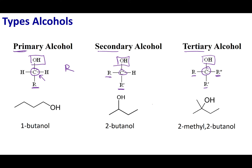Note that when I write R, R prime, and R double prime, this means the R groups are carbon chains but not necessarily the same chain. For example, one R group might be one carbon long and another two carbons long — these designations are arbitrary. We're just indicating that there are different R groups attached.